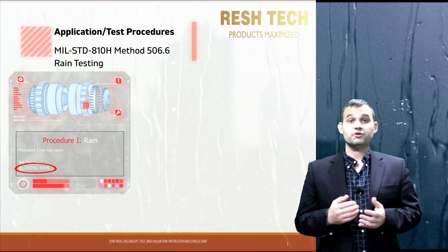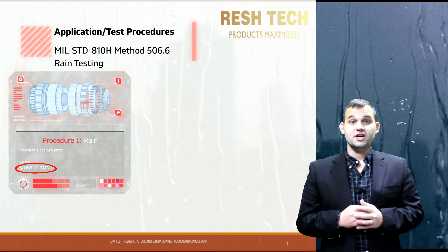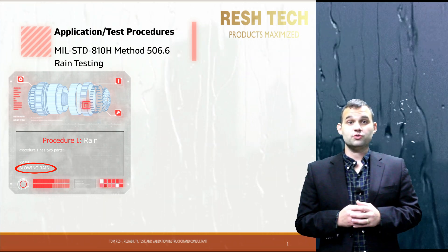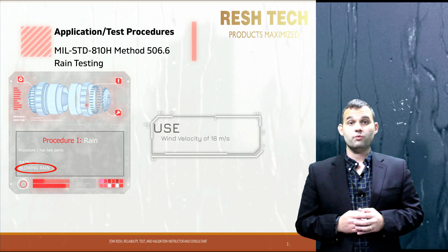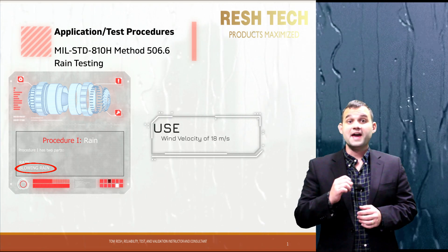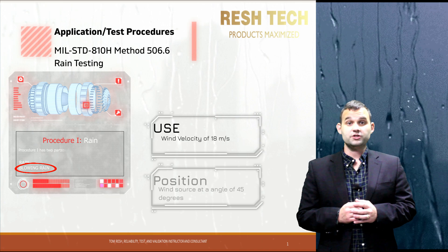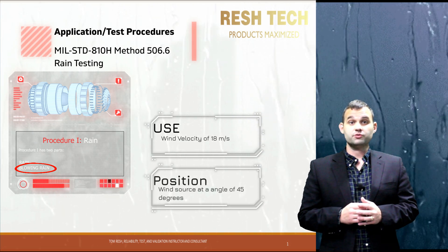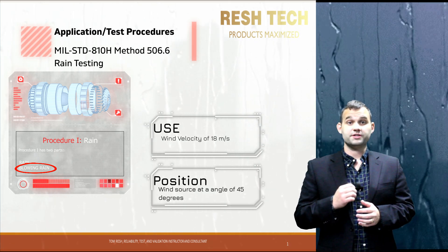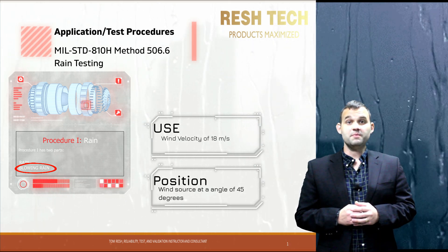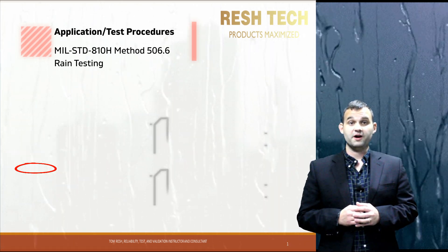Part B details blowing rain. An additional element of wind is added to simulate a rain and windstorm. It is recommended to use a wind velocity equal to 59.1 feet per second or 18 meters per second, with the wind source positioned to cause rain to impact the system at an angle of 45 degrees from horizontal. Measure the wind velocity to ensure it meets your test case requirements.